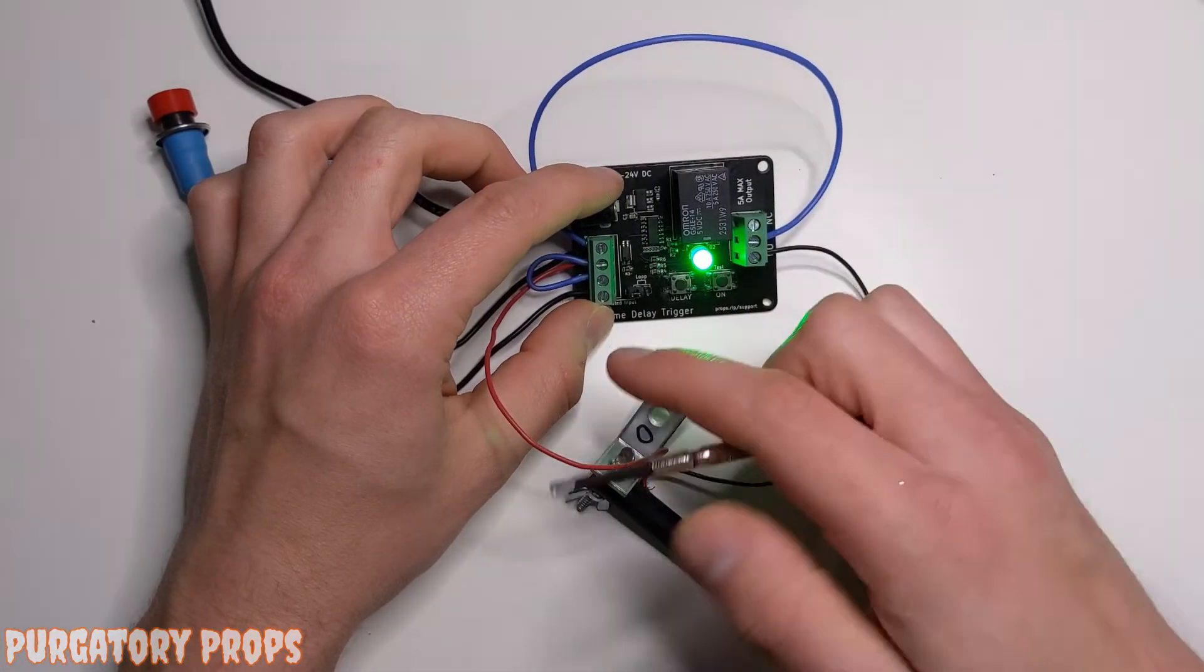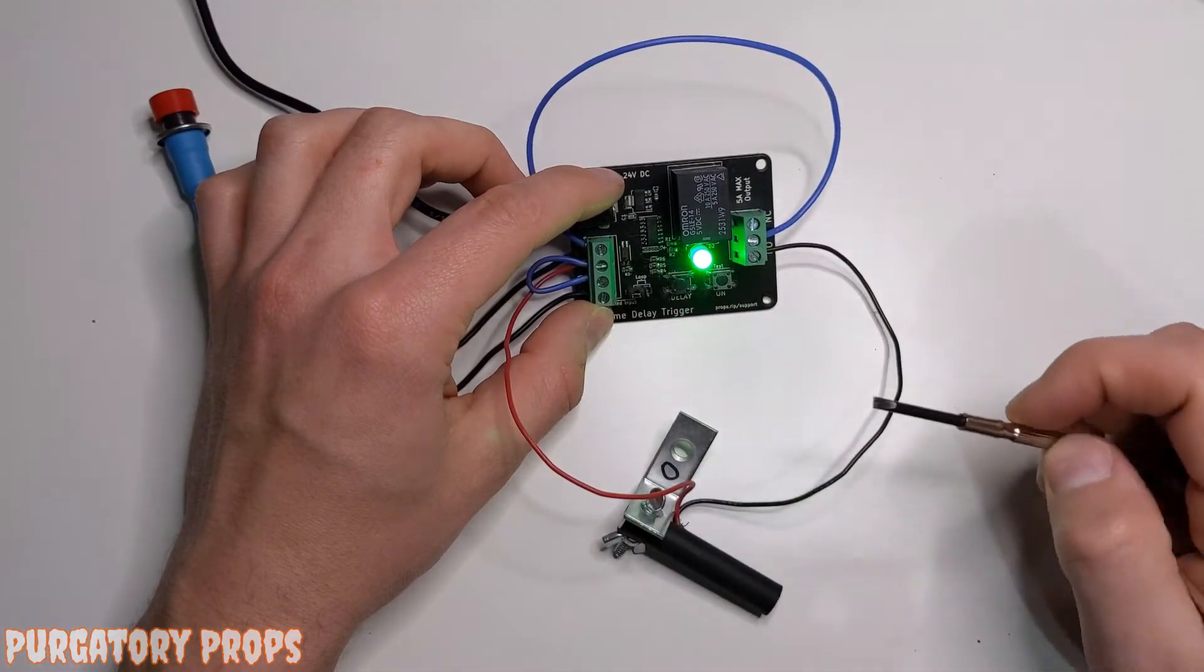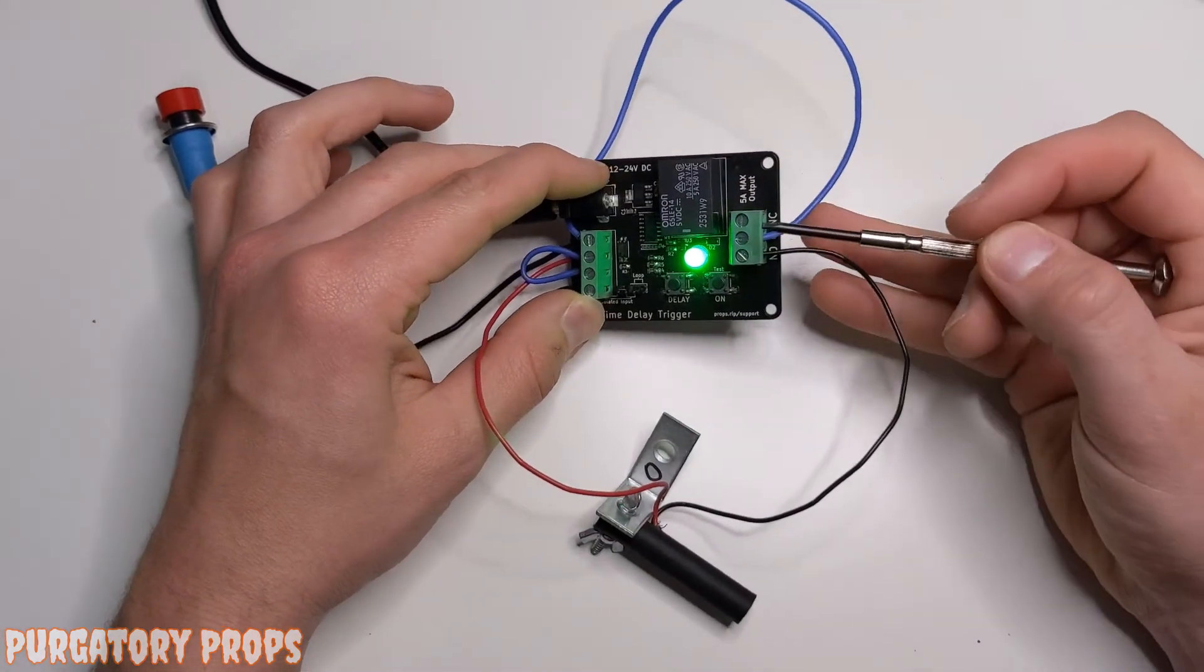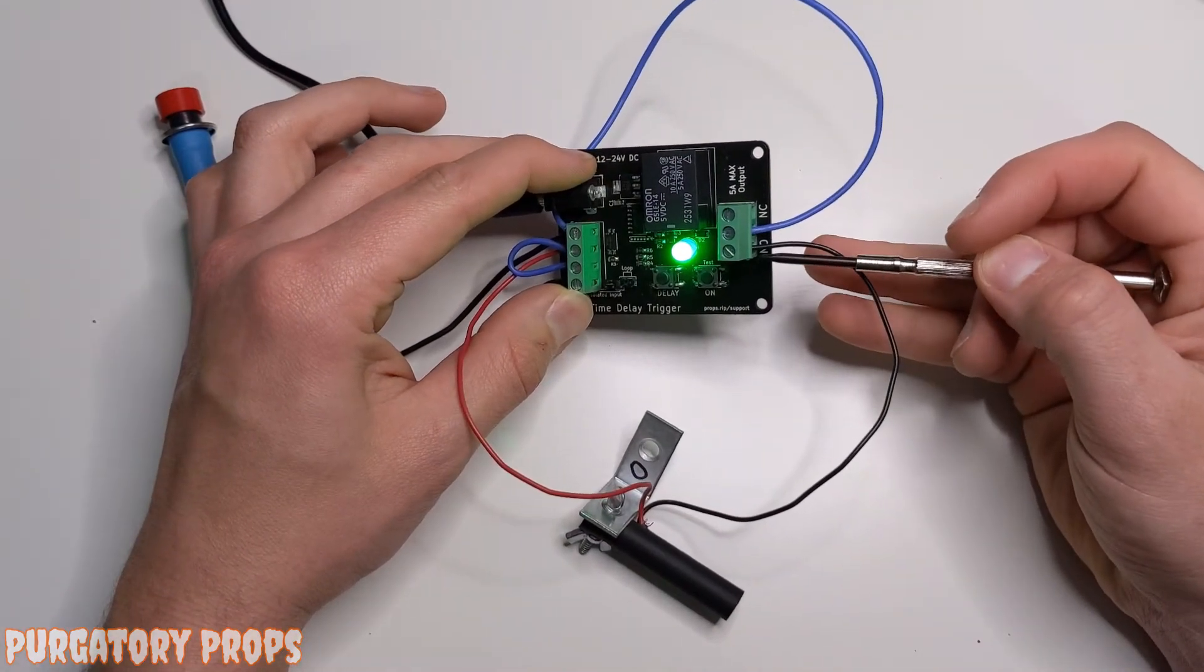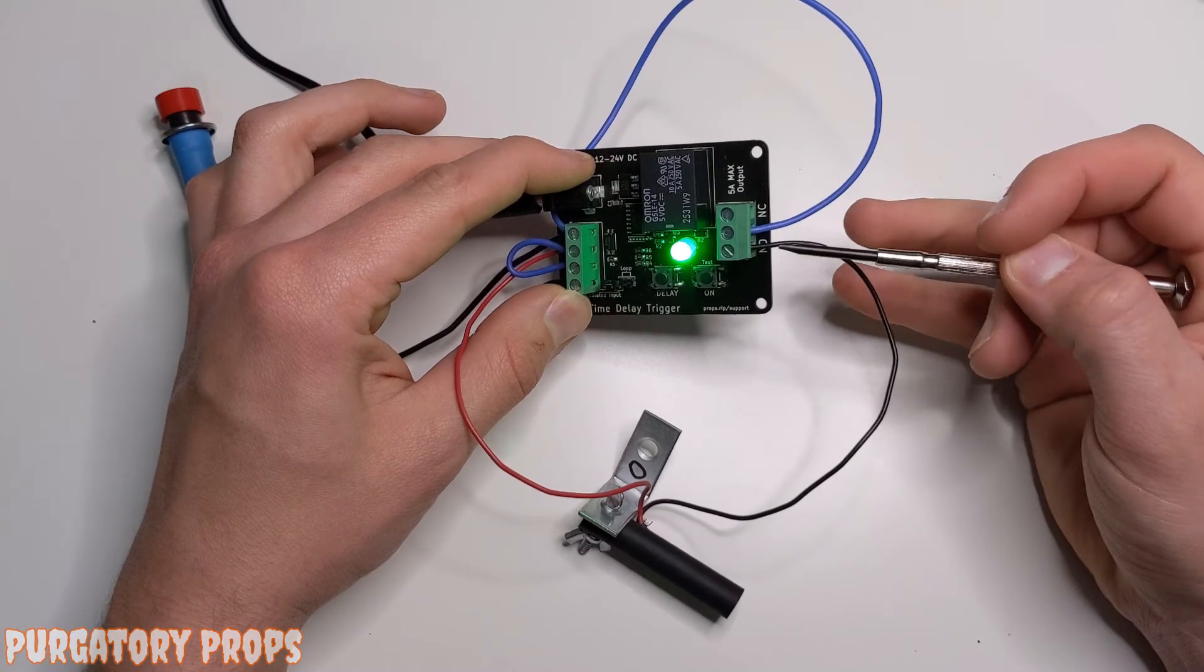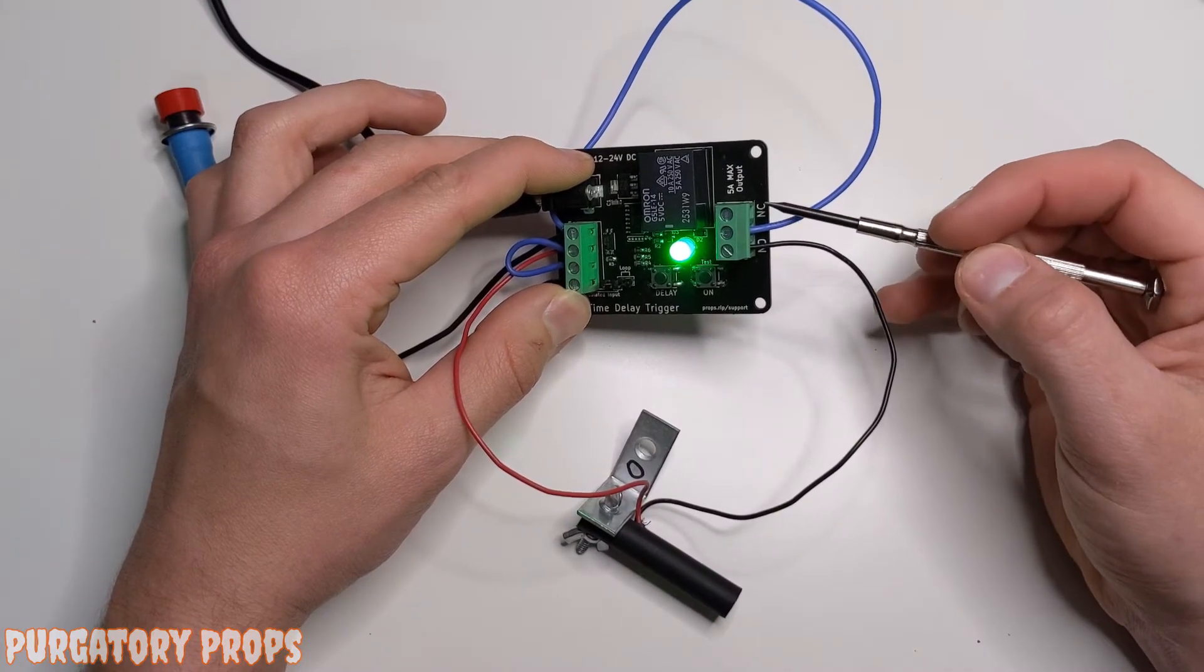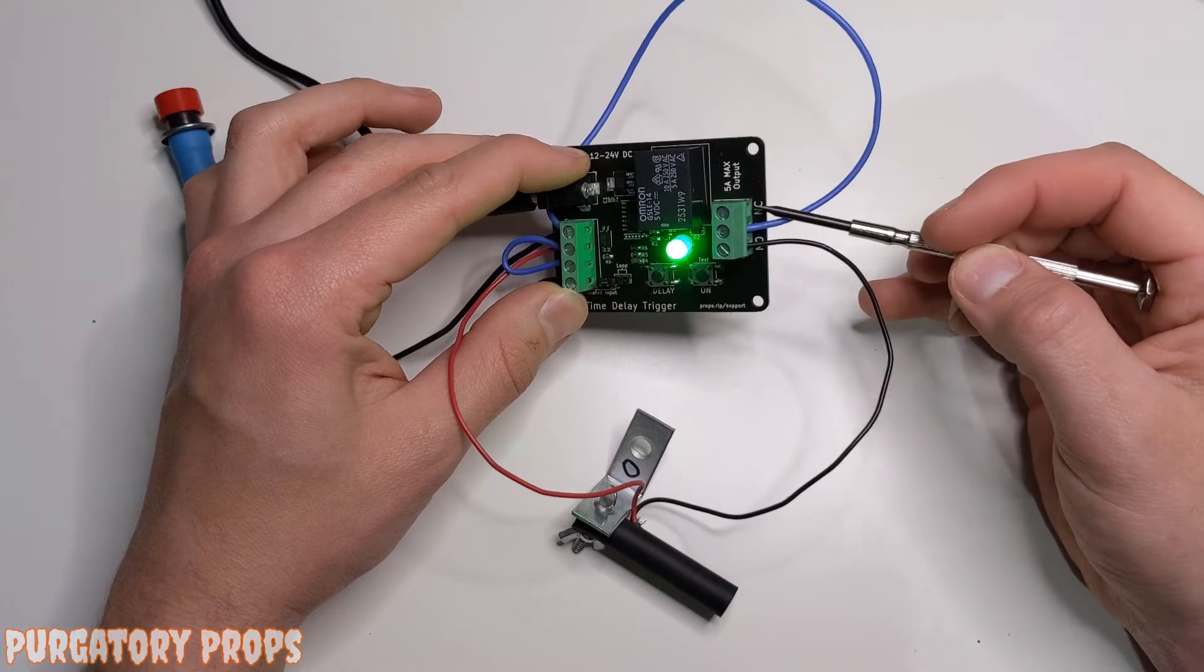Then the LED is just connected over to the positive as well. Since this is a relay, when it turns on, C and normally open will be connected. Right now C and normally closed are connected.